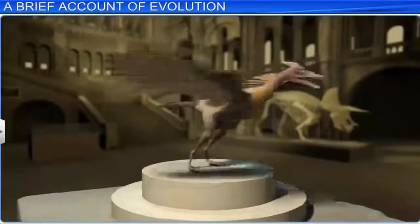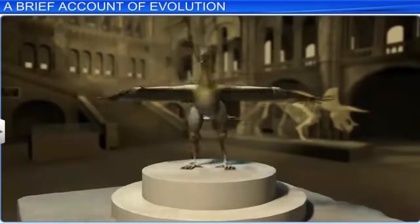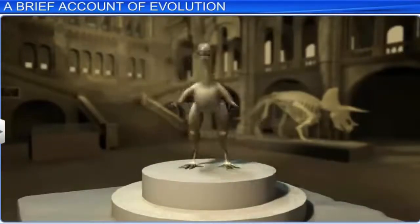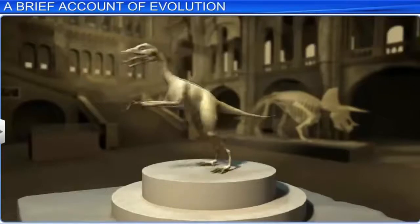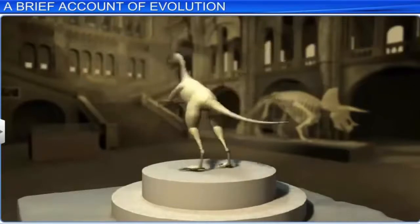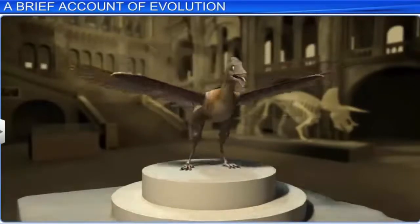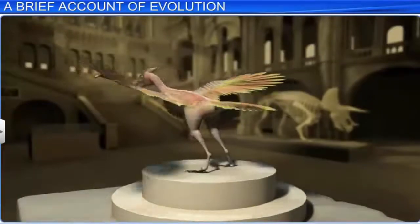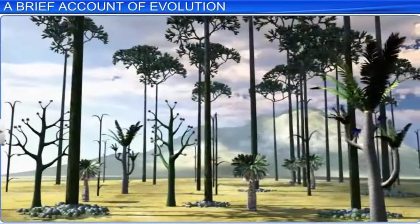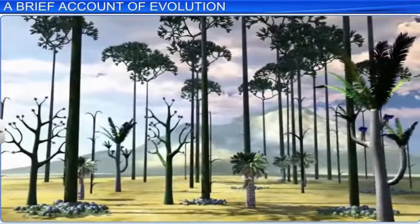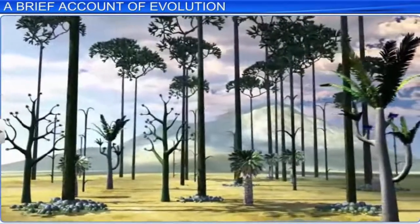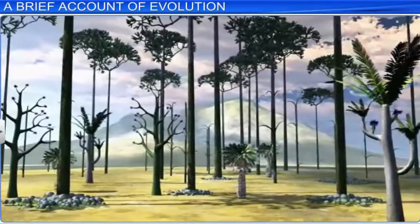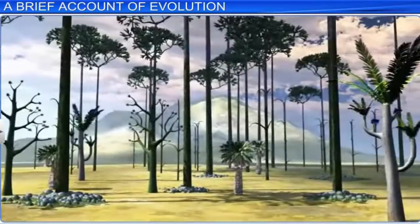It is estimated that birds have descended from reptilian ancestors, such as Ornithischian dinosaurs, during the Jurassic period of the Mesozoic Era. In fact, birds became modernized in the Cretaceous period of the Mesozoic Era. The flora in the Mesozoic Era was dominated by flowering plants and non-flowering plants such as ferns, pines, conifers, and cycads.